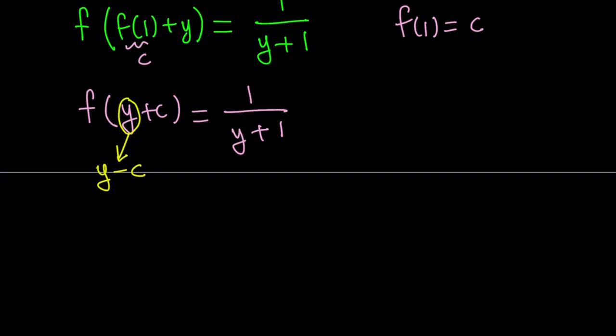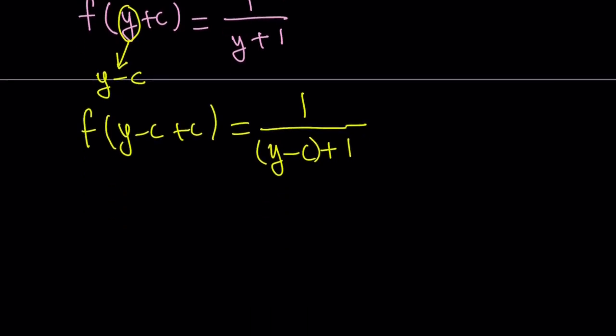So if you replace y with y - c, we get f(y - c + c), and on the right-hand side we get 1/(y - c + 1). The c cancels out and we end up with f(y) = 1/(y - c + 1). I'm going to write that as 1/(y + 1 - c).